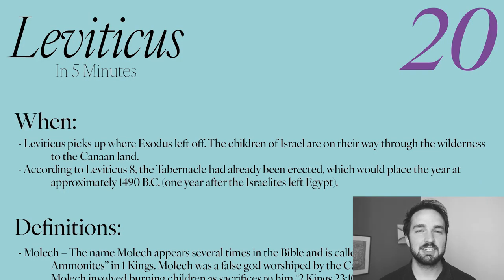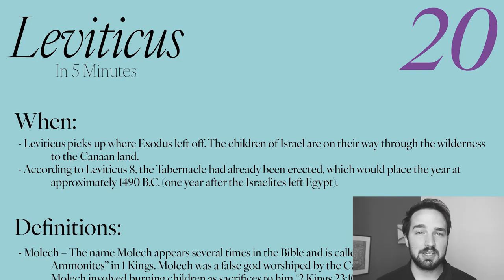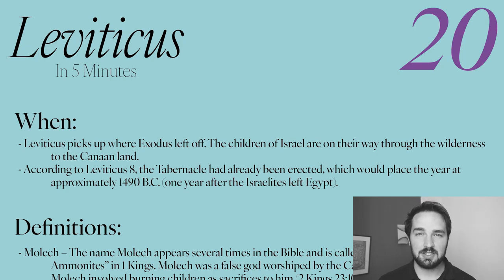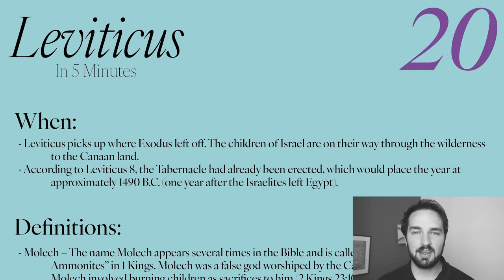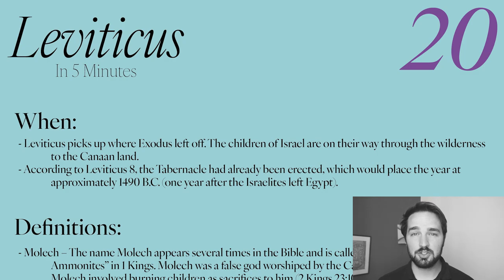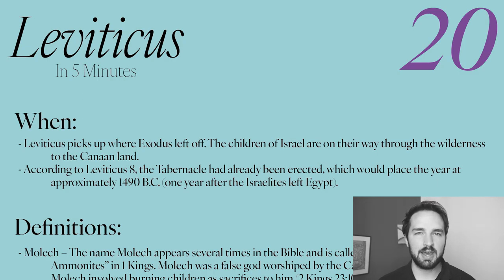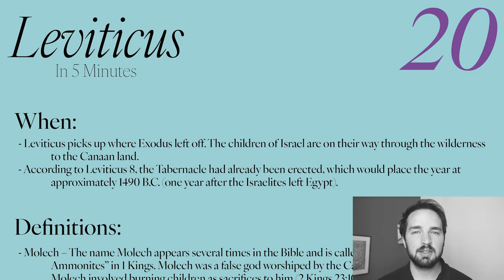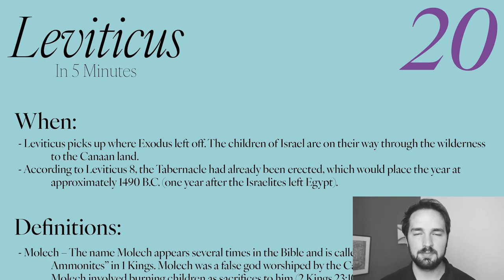When did the events of Leviticus chapter 20 take place? The Israelites left slavery in Egypt about 1491 BC. These laws were given probably about a year after that, after the tabernacle had been erected, which would place us about 1490 BC.